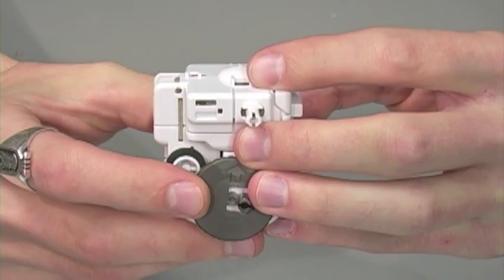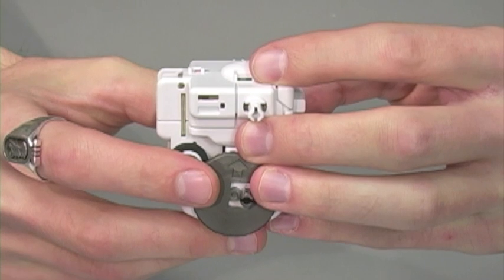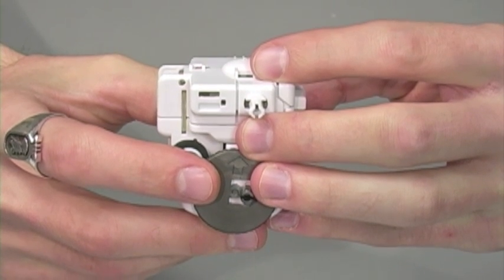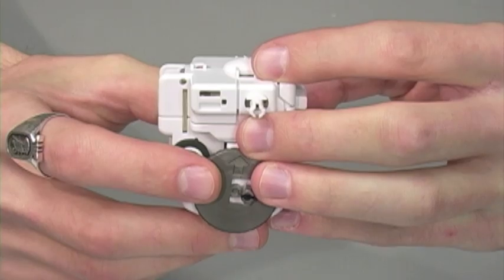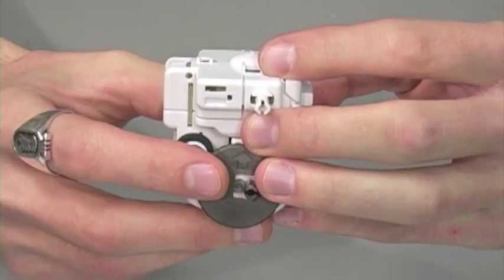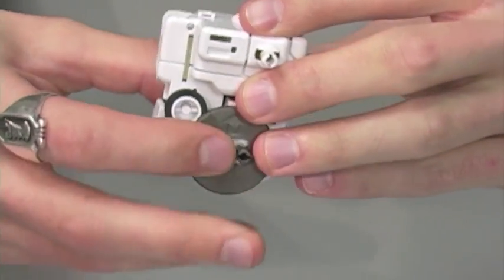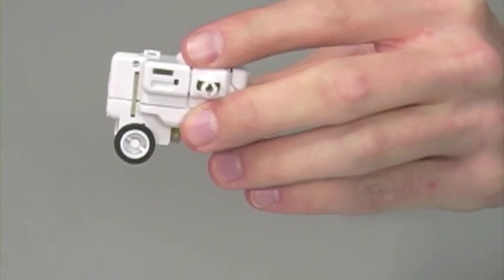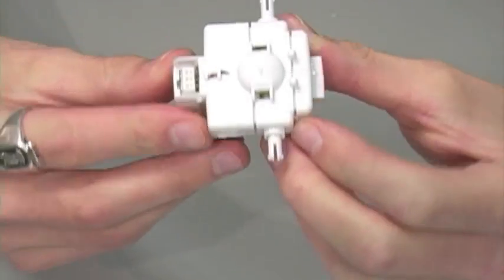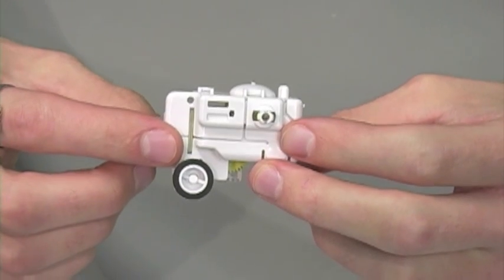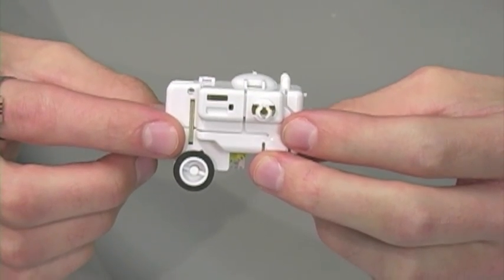And now with both of our gearboxes complete and tested, we can choose any of the seven models from the Solar Rechargeable 7-in-1 Space Fleet by OWI Robotics to build. I'm going to disassemble our gearbox as I've chosen to build the space rover which requires the upper gearbox. So let's get started with our space rover.